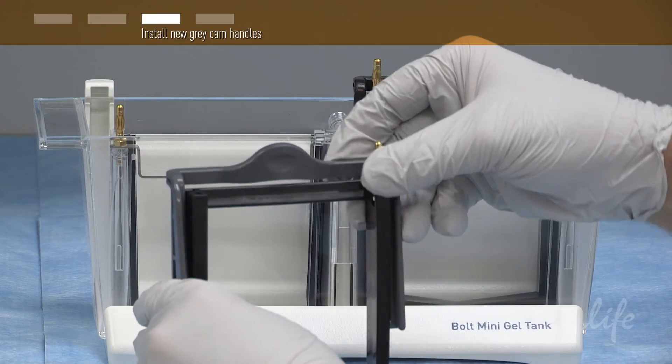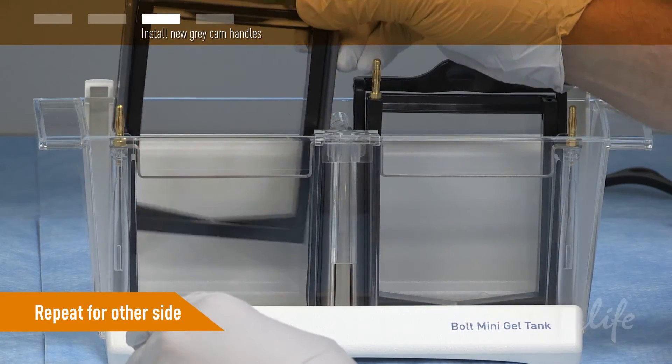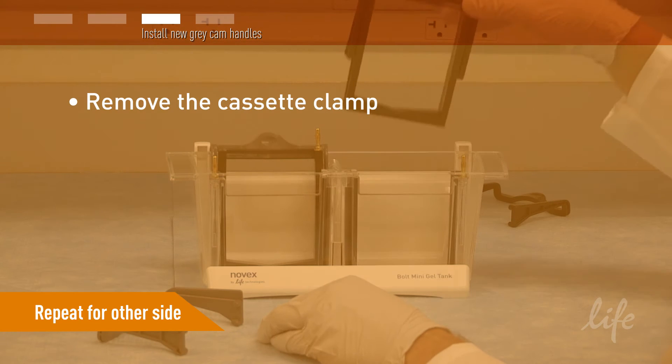Place the cassette clamp in the Bolt mini gel tank. Repeat this procedure for the other cassette clamp.